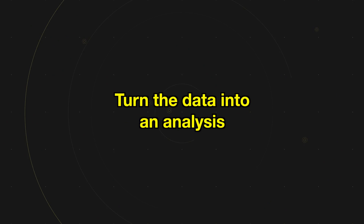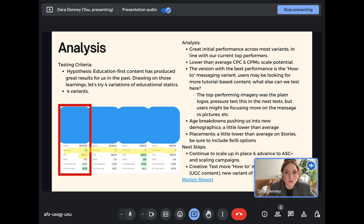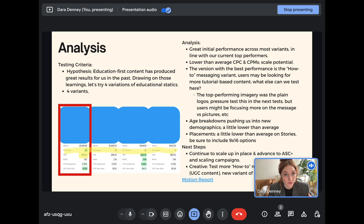Now you have all this data — it's time to turn it into an analysis. So this is what that would look like. We're going to go over the education statics. The reason we wanted to do these is because educational content has produced really great results for us in the past. Drawing from those learnings, we wanted to try doing them in a static version because the prettiest versions we'd done were all video. We had four variants, and we had great initial performance across all of them — even in line with some of our top performers.